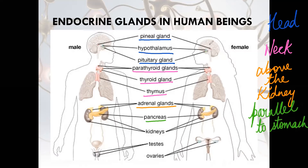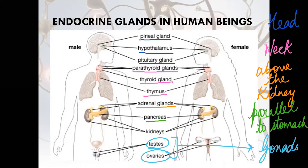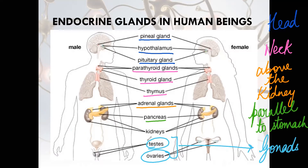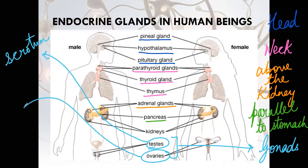Kidney is not a gland. Then come testes and ovary — together they are known as gonads. Testes are located in the scrotum, outside the body, and ovaries are located in the lower abdomen.